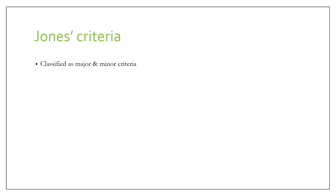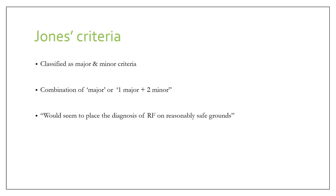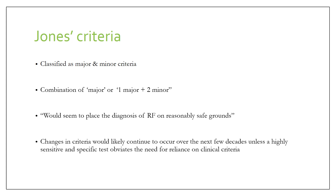Whatever the revisions or modifications, the basic principles and general framework of the original criteria remained intact throughout. Jones originally classified the criteria as major and minor, and said that a combination of two major, or one major and two minor, would place the diagnosis of rheumatic fever on reasonably safe grounds. At that time he also predicted that changes in criteria would likely continue to occur over the next few decades, unless a highly sensitive and specific test obviated the need for clinical criteria.